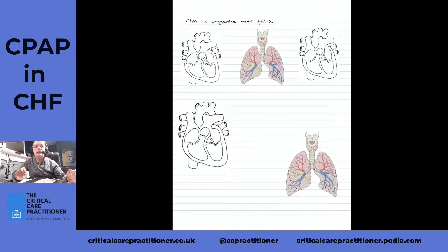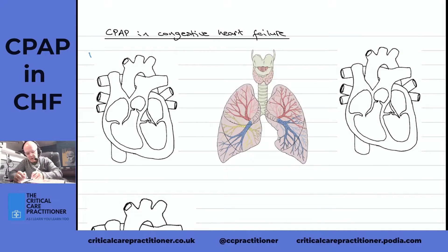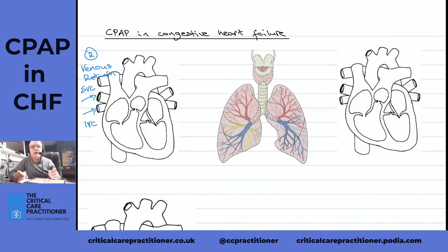We're going to start by looking at the right side of the heart, the lungs, and the left side of the heart to understand the pathway that the blood and fluid takes through the heart and the lungs. Starting on the right side of the heart, we have deoxygenated blood returning from the body via the superior vena cava and the inferior vena cava. This is known as venous return — the blood coming back from the body to the heart. That blood flows into the right atrium, the right ventricle, and then into the lungs via the pulmonary artery.